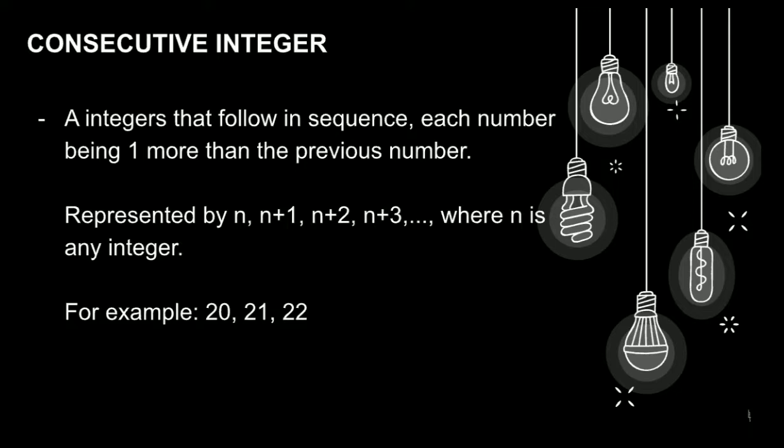Ano nga ba ang consecutive integers? It is an integers that follow in sequence. Each number being 1 more than the previous number. It was represented by n, n+1, n+2, n+3, and so on and so forth, where n is any integer. For example, 20, 21, and 22.